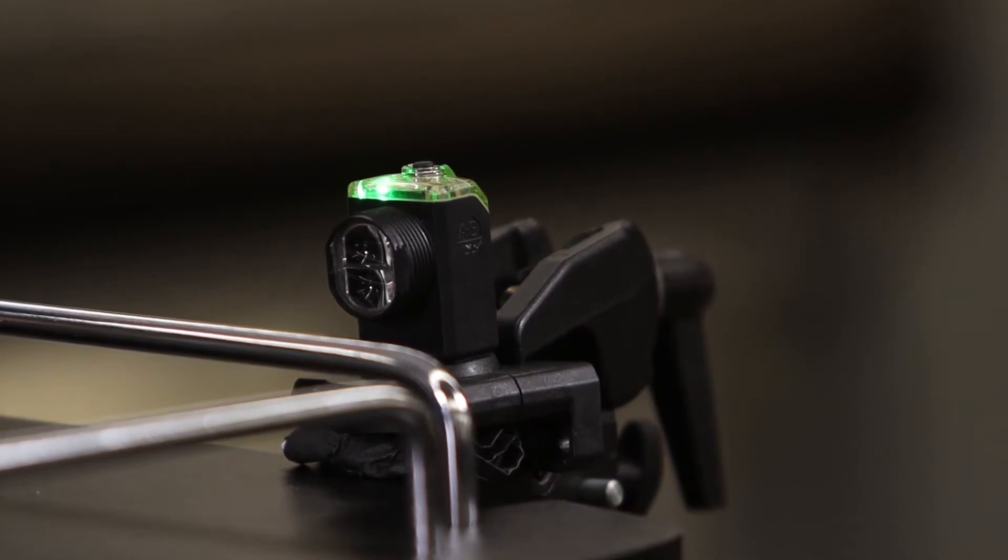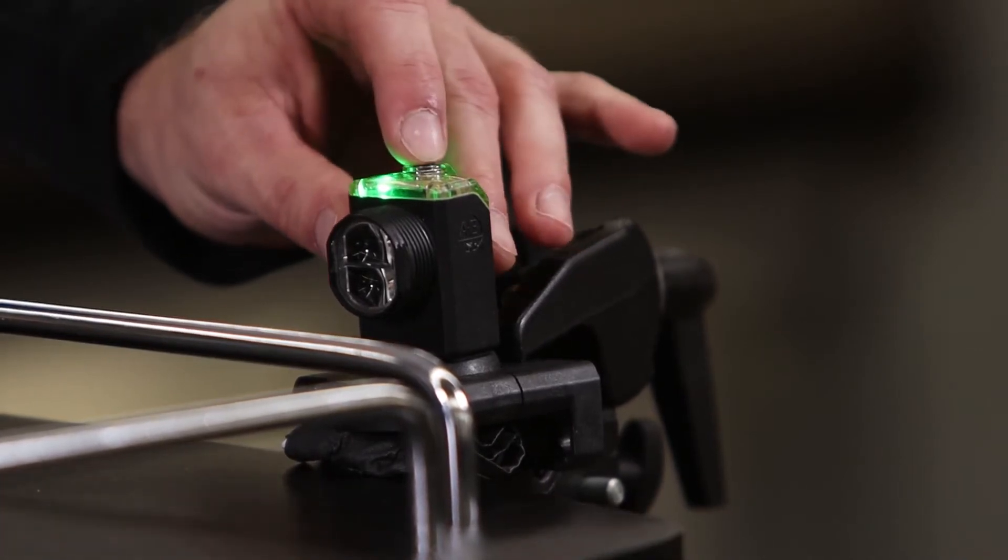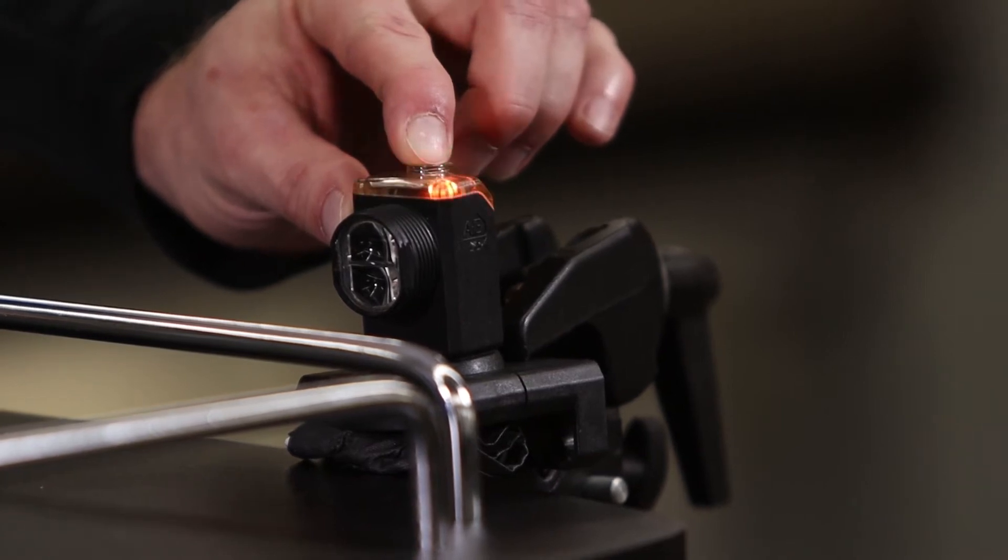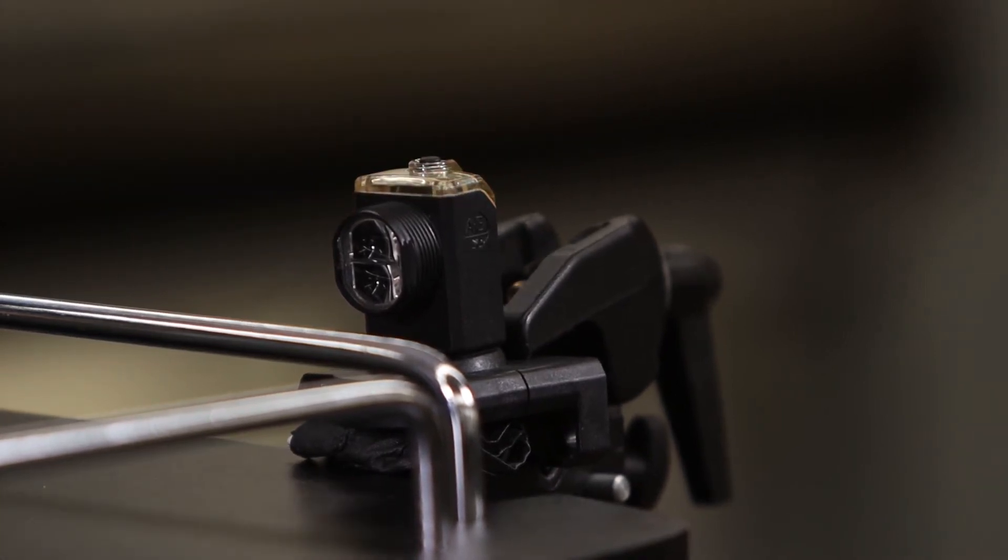Next, press the teach button and hold it for 3 seconds and release. You should see the green LED go off and the orange LED begin to flash. The sensor has now learned the background.